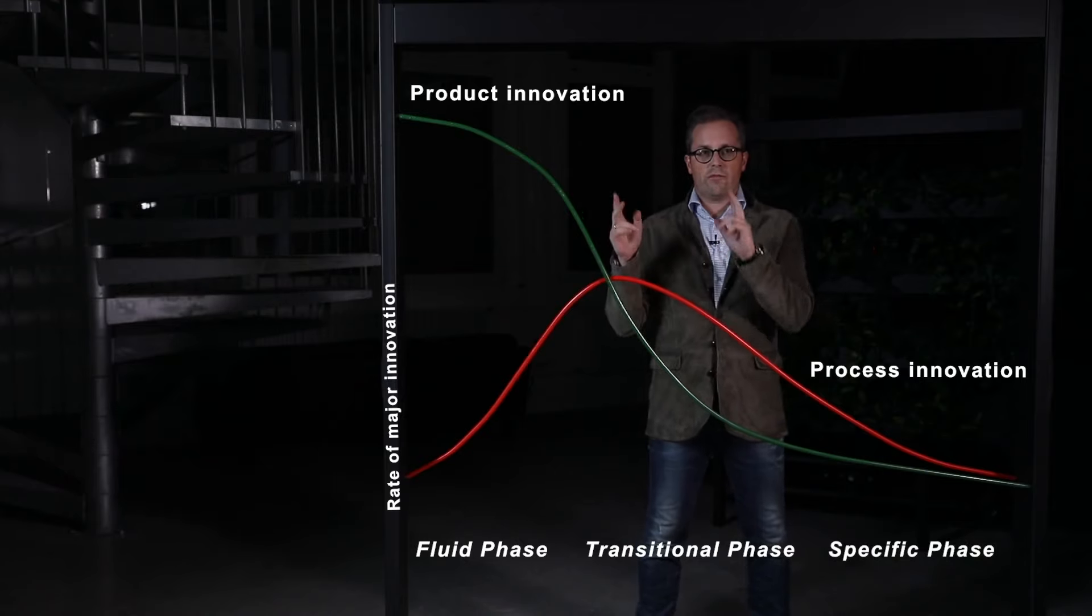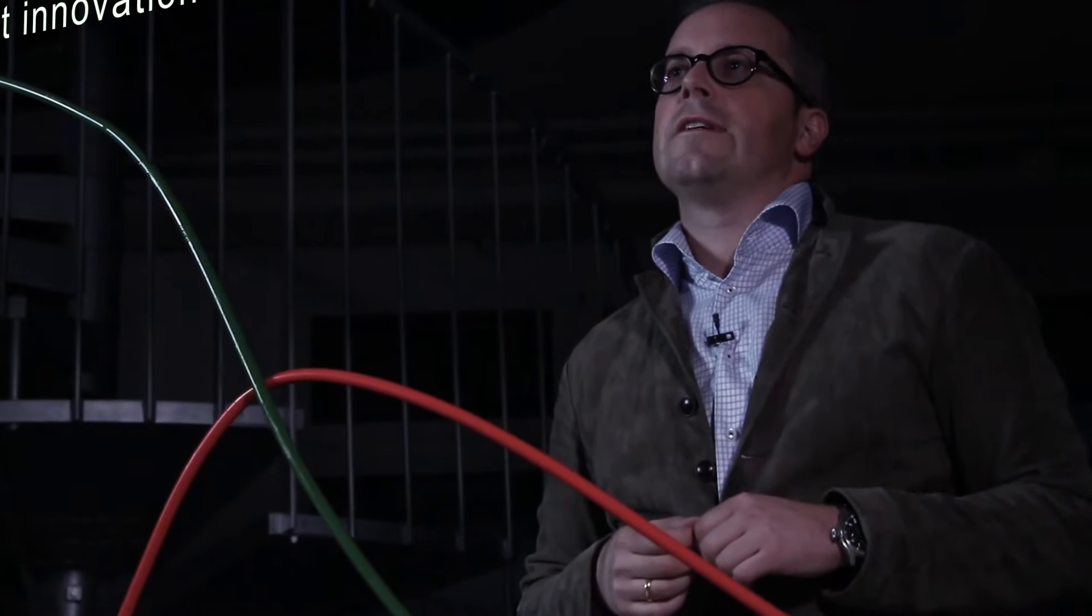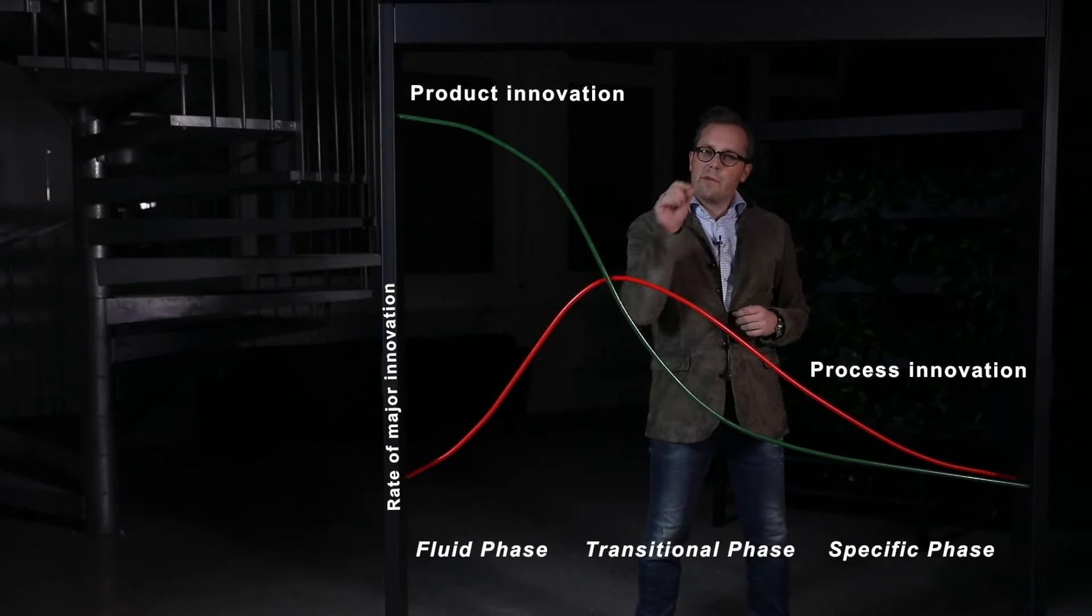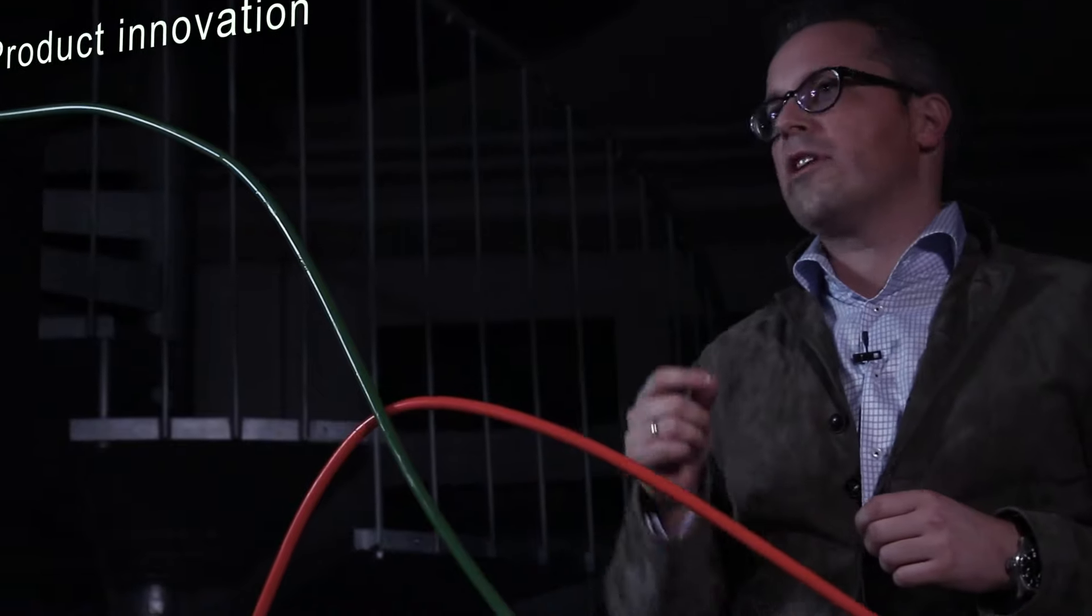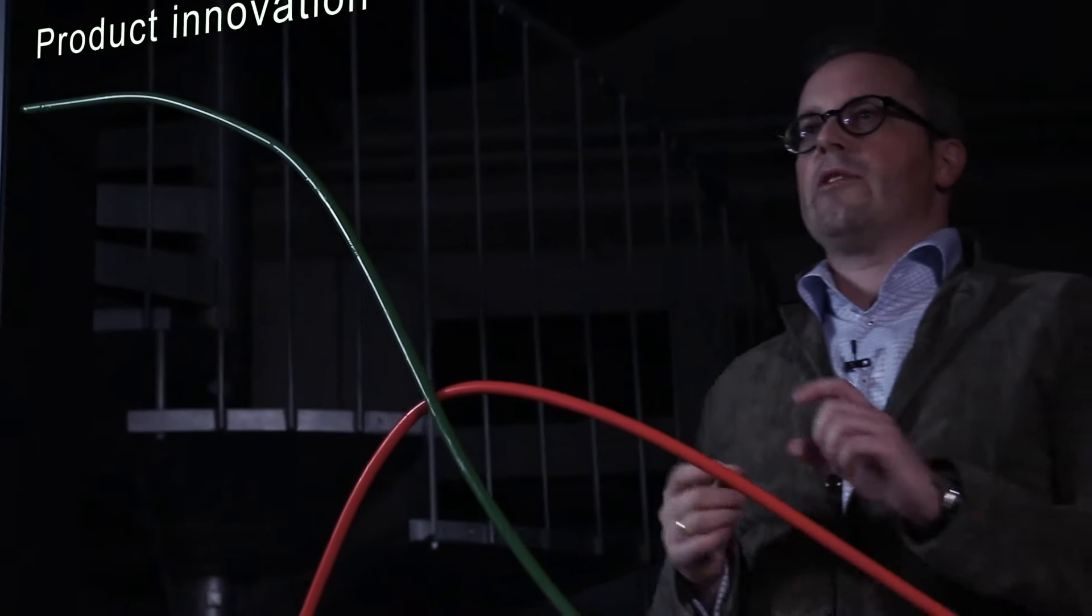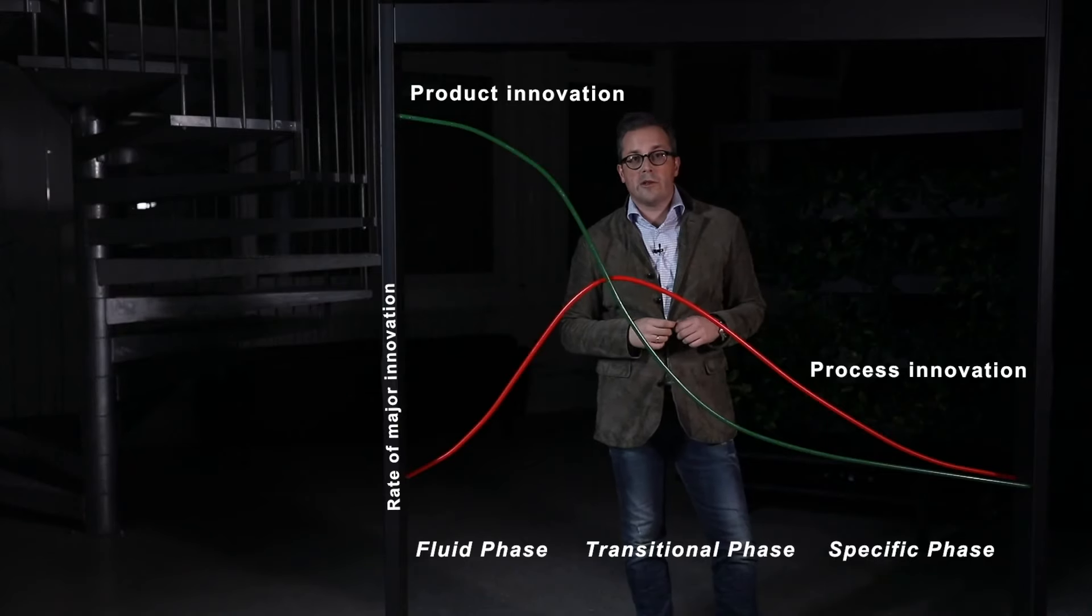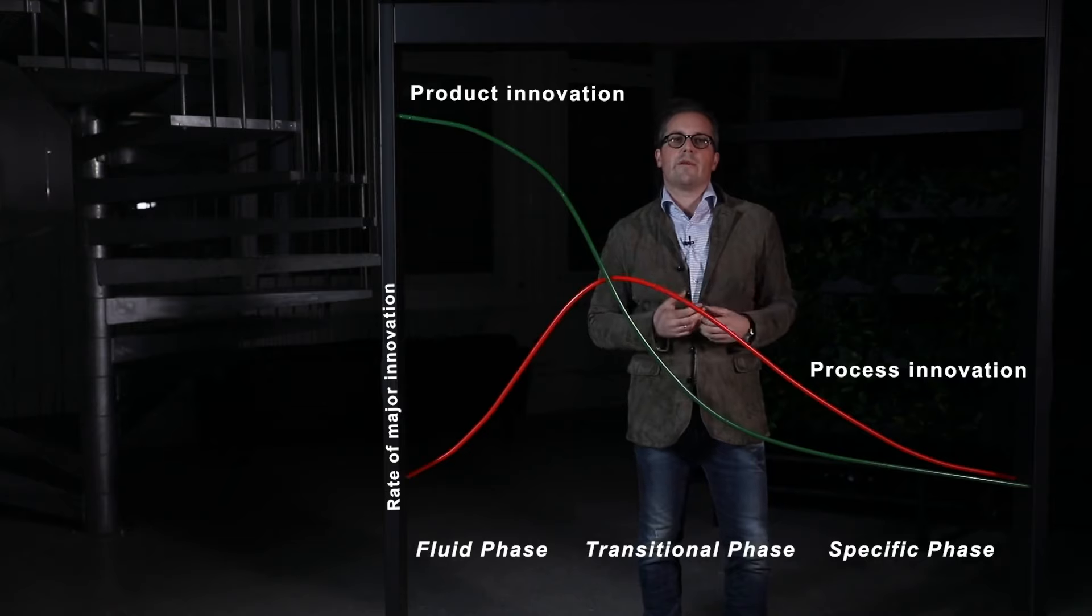Some industries then enter a specific phase in which the rate of major innovation dwindles for both product and process. These industries become extremely focused on cost, volume, and capacity. The product and process innovation only appear in small incremental steps.